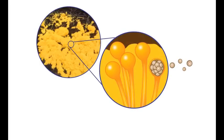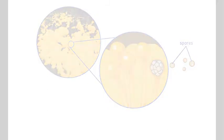They feed on decomposing organic materials and reproduce by spores. All fungus-like protists are able to move at some point in their lives using pseudopods.